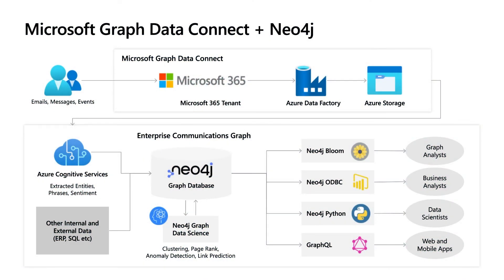Here's a simplified flow of the architecture we've built around Microsoft Graph Data Connect. Microsoft Graph Data Connect uses Azure Data Factory to export data in bulk to Azure Storage. From there, we have pipelines that pre-process this communications content, and we're using Azure Cognitive Services to perform NLP natural language processing operations on the data before we load it into Neo4j. That data is then loaded into Neo4j, and we've built a canonical data model that represents Microsoft Graph Data Connect and all of the entities that you can extract from that data.